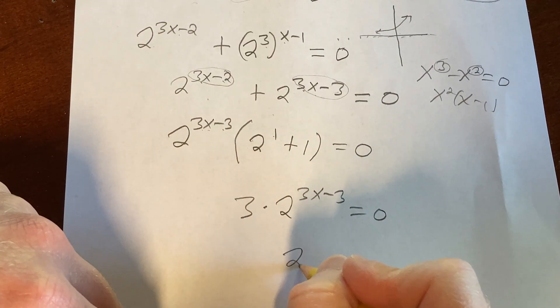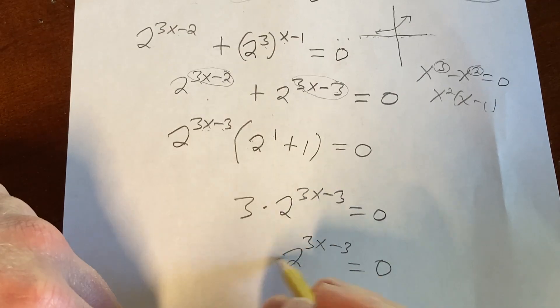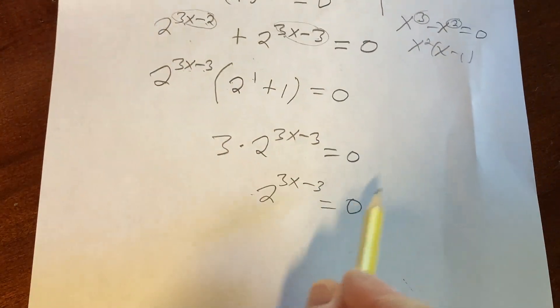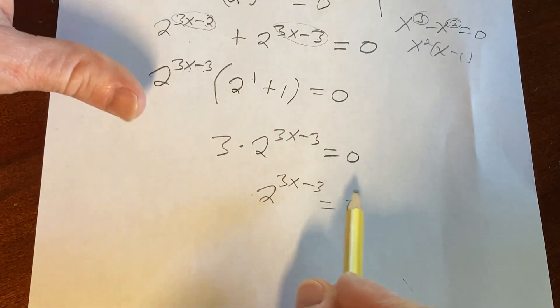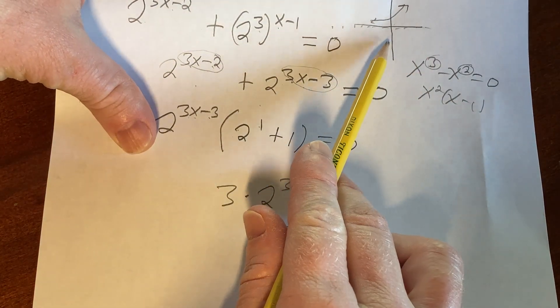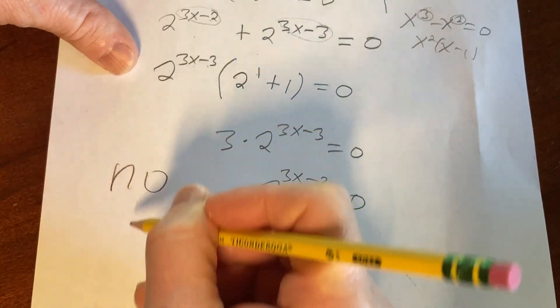We divide by 3, so we get 2 to the 3x minus 3, equal to 0. So again, we're in that same situation where we still have to kind of think about what's going on. But at this point, perhaps it's a little bit easier. You say, okay, 2 to the x, it's never going to be negative, so this is impossible. So the answer is no solution.